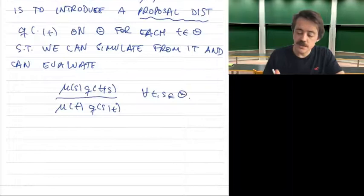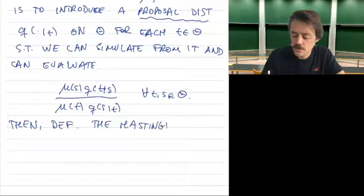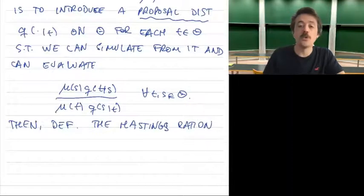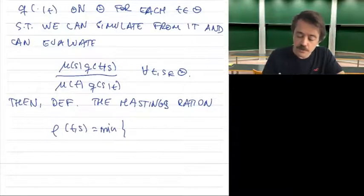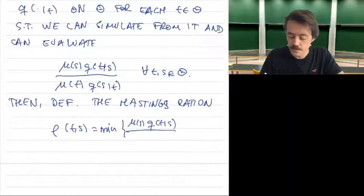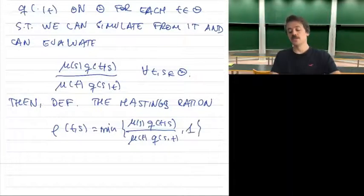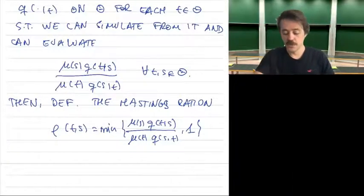Once we have this, we define the Hastings ratio ρ(t, s), which is the minimum of this ratio q(s|t)·μ(s) / (q(t|s)·μ(t)) and one. This is very similar in spirit to the accept-reject ratio — we will be simulating a uniform random variable similarly.